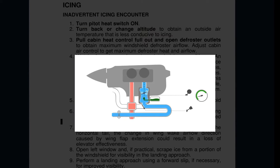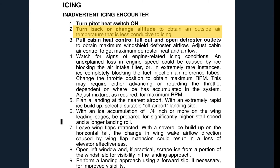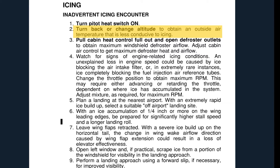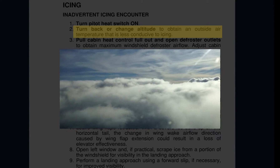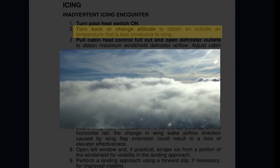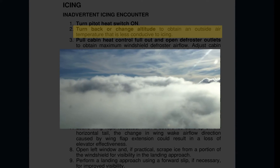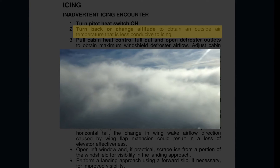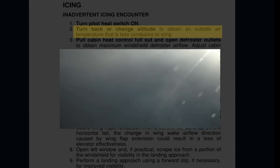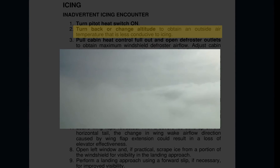For aircraft equipped with carburetor systems, if engine power is reduced, carburetor icing can be eliminated with the use of carburetor heat. The next step will be to either make a 180-degree turn and try to exit IMC conditions if they were recently encountered, or change altitude to obtain temperatures less conducive to icing. In a limited-power airplane such as a Cessna 172, a better option would be to begin a descent trying to find warmer temperatures that could stop the ice buildup.